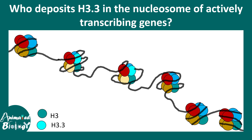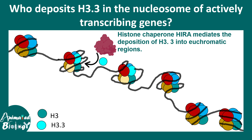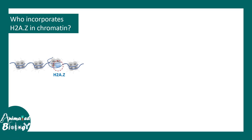The question is: who deposits H3.3 into the nucleosome of actively transcribed genes? There are specific molecules known as histone chaperones. One such example is the HIRA complex, which deposits H3.3 into euchromatin regions. The next question is how H2A.Z is incorporated into chromatin.